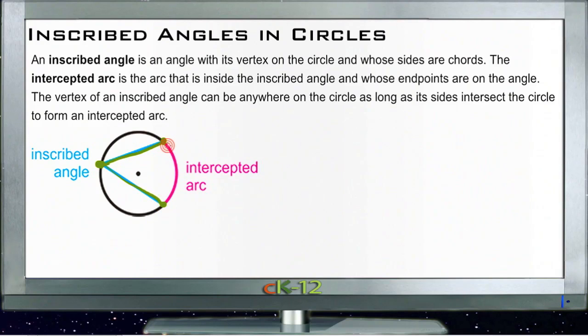When you have an inscribed angle like this one, it defines an intercepted arc. So the two endpoints of the angle become the endpoints of an arc on the opposite side of the circle. The vertex of an inscribed angle can be anywhere on the circle as long as its two sides then form an intercepted arc somewhere on the circle.